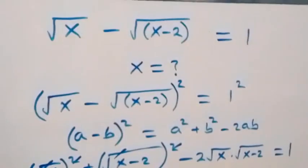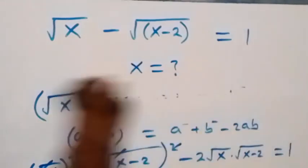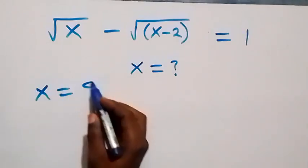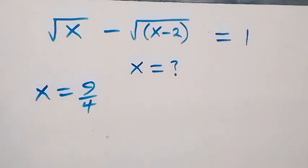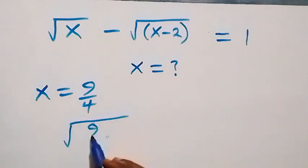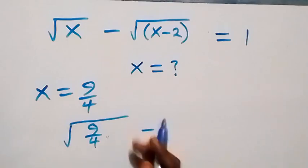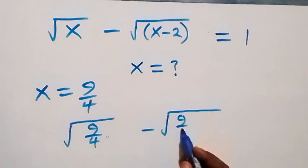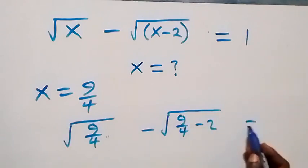Here we have the solution to the given problem as x equals 9 over 4. And here we can check to see if it will satisfy the given problem. Let's substitute x equals 9 over 4. When x equals 9/4, what we have becomes √(9/4) minus √(9/4 - 2) equals 1.